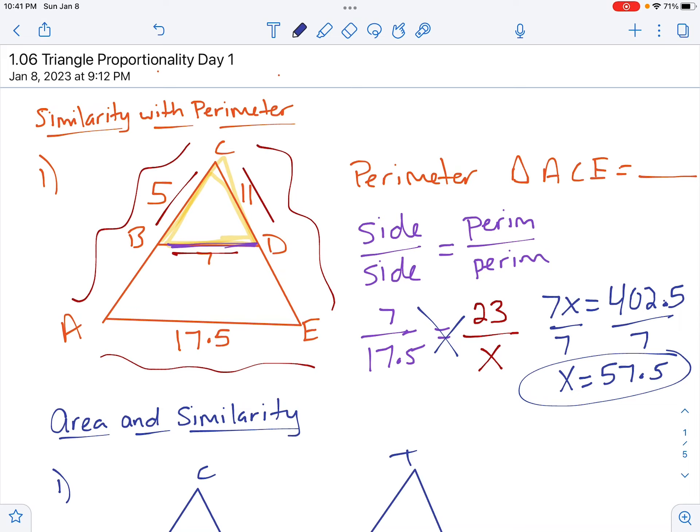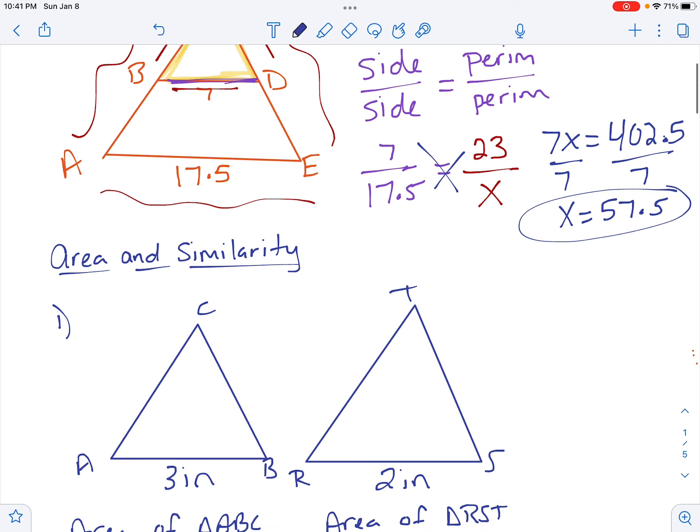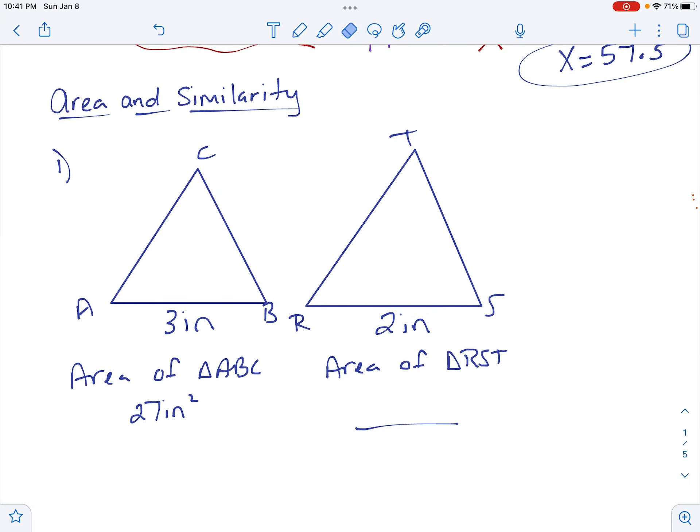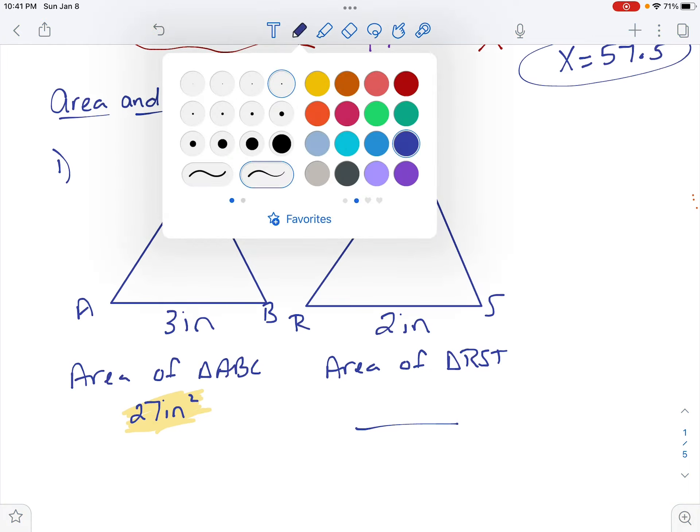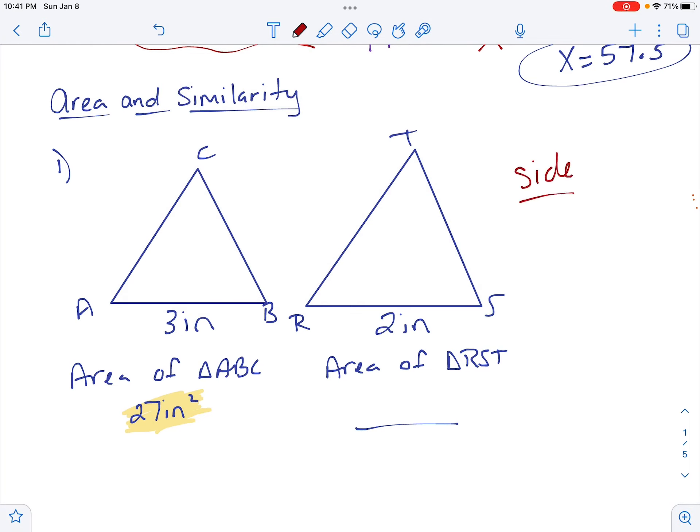Now, when we do area, we have to remember one big difference. Look at how your area is labeled. Our area down here is labeled inches squared, which means we are still going to do side over side to get that scale factor, equals area over area. However, the area is squared, which means if we cross multiply now, we're not having the same terms here. So we're going to take this first fraction, side over side, and we're going to have to square that.